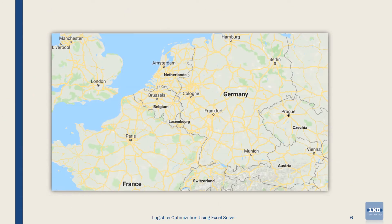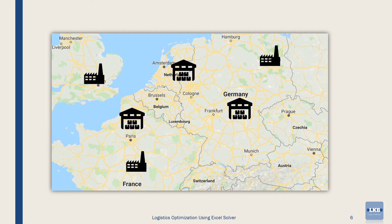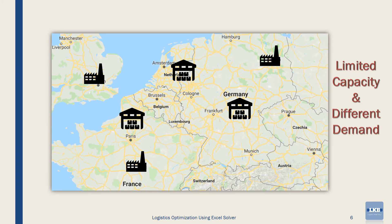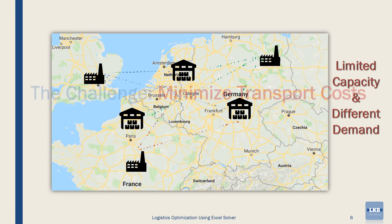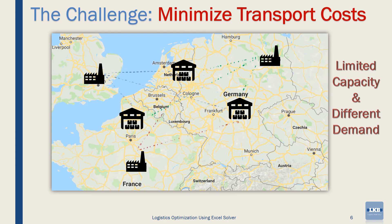Another typical challenge is when a company wants to minimize the cost of transporting a product from different factories to customers in different locations. The problem is that each factory has a limited production capacity, and each customer has a different demand. Also, because factories and customers are in different locations, transportation costs differ. How should the company distribute the product without exceeding the factory's production capacity, while meeting customer demand and doing so at the lowest possible cost?